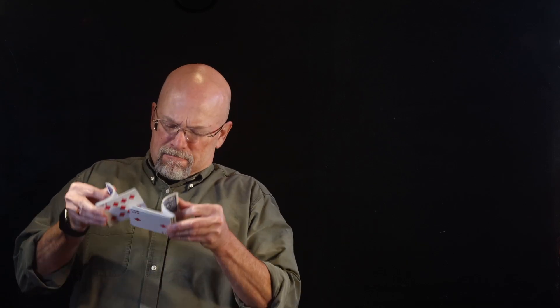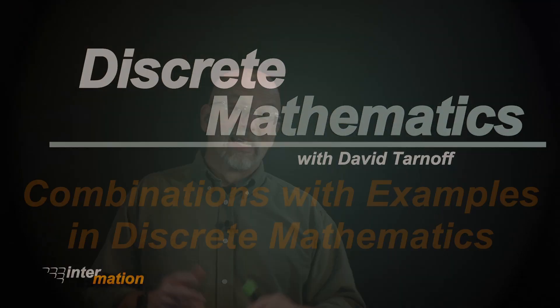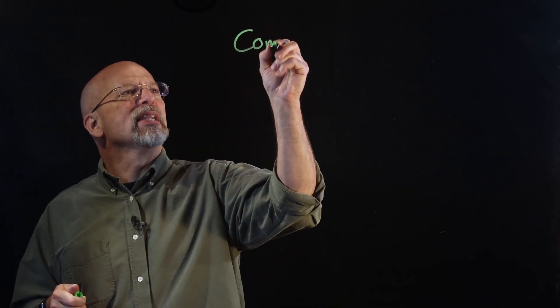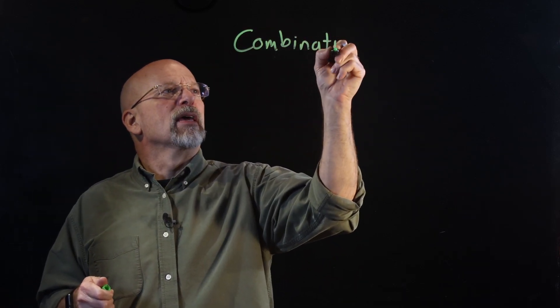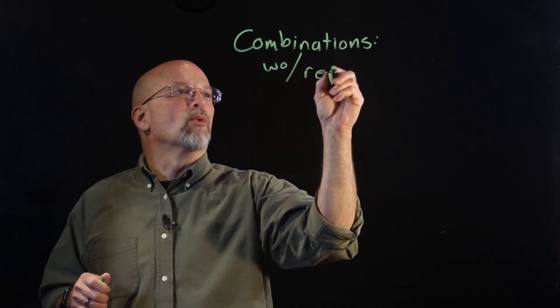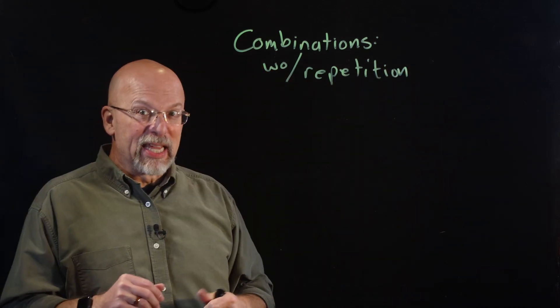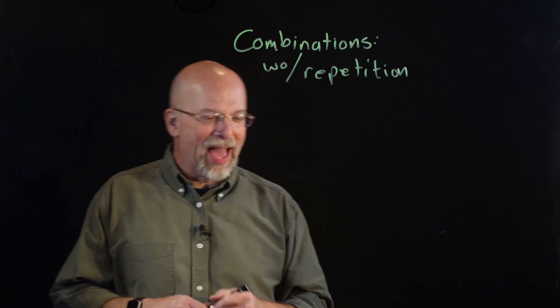Anybody up for a game of cards? In our discussions about sequences and combinations, we've talked about sequences that have order with duplicates, and sequences that have order but no duplicates. Let's talk about something called combinations — specifically the ones without repetition or duplication. This one's easier than combinations with repetition, which we'll cover in the next lesson.